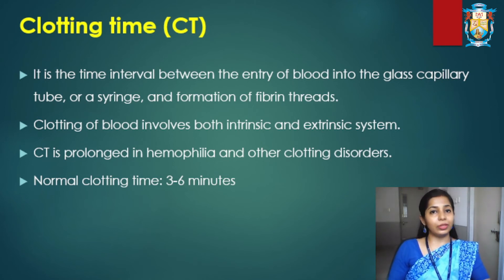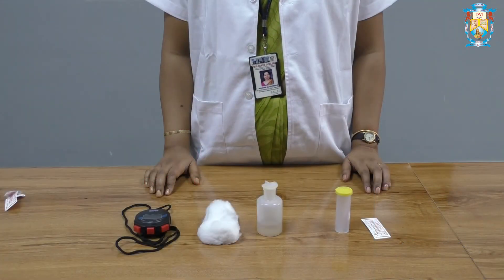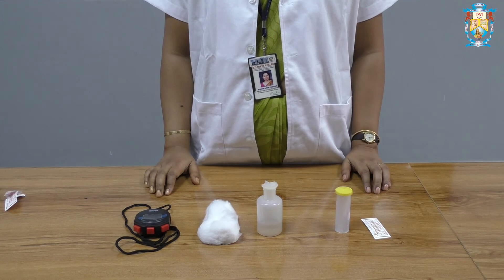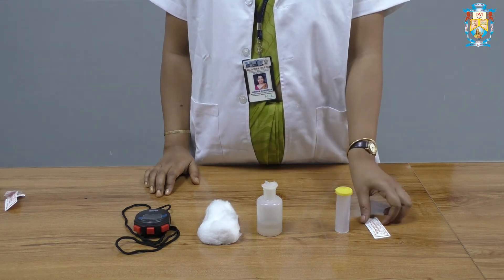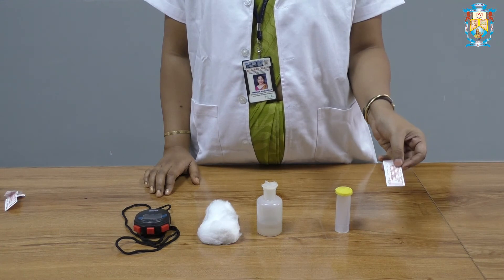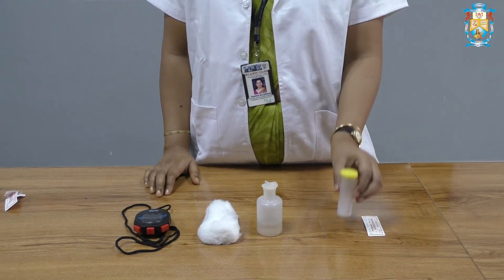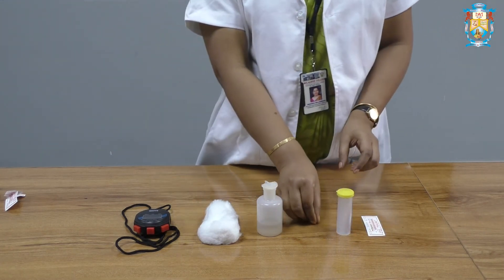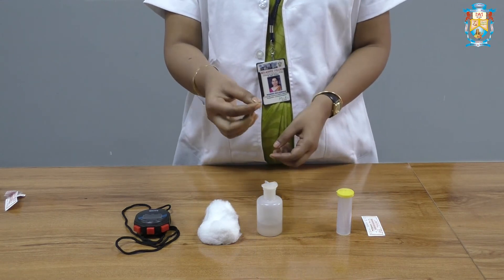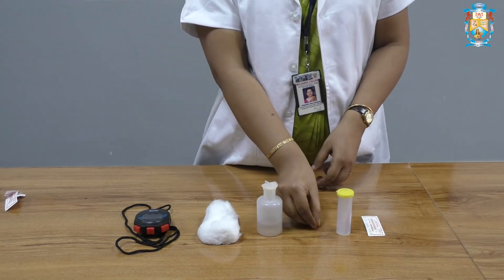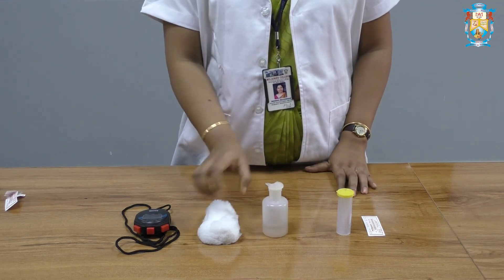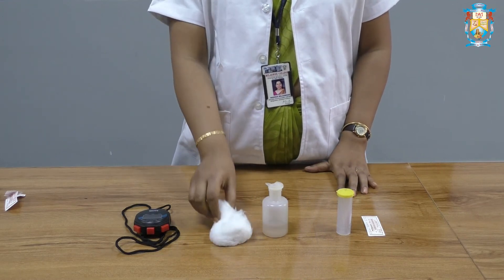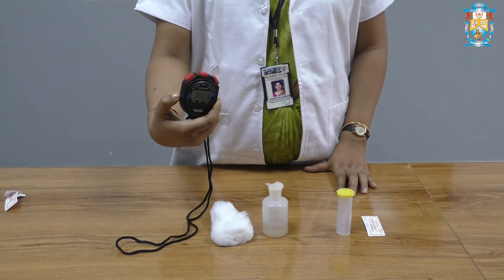Let us perform the clotting time experiment. Materials required for the determination of clotting time are: sterile lancet, capillary tubing without anticoagulant, surgical spirit, cotton, and stopwatch.